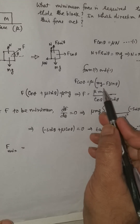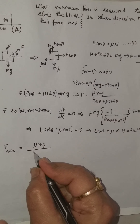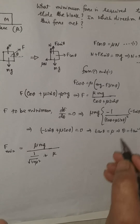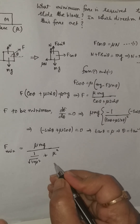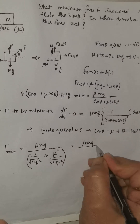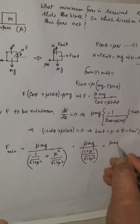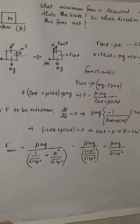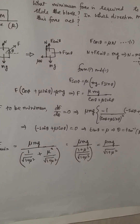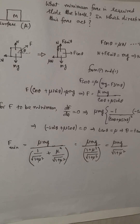The minimum force can now be calculated. Since tan theta equals mu, we have cos theta equals 1 over root(1 plus mu squared) and sin theta equals mu over root(1 plus mu squared). Substituting: F minimum equals mu Mg divided by (1 plus mu squared) over root(1 plus mu squared), which simplifies to mu Mg divided by root(1 plus mu squared). This is the minimum force acting at angle tan inverse mu with the horizontal required to just slide the block on the rough surface.